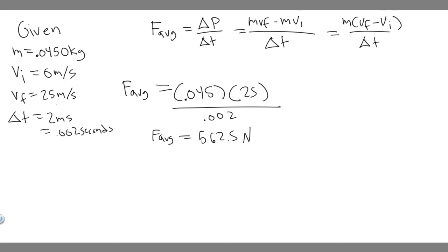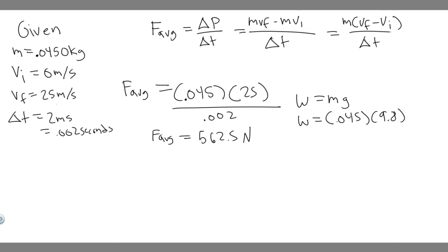Now the second part: is the effect of the ball's weight during the time of contact significant? Keep in mind that weight is just the force due to gravity — it's simply mg. Let's solve for the weight to show whether or not it's significant. Mass is 0.045, multiplied by g which is 9.8. So 0.045 times 9.8 gives us 0.441 newtons.